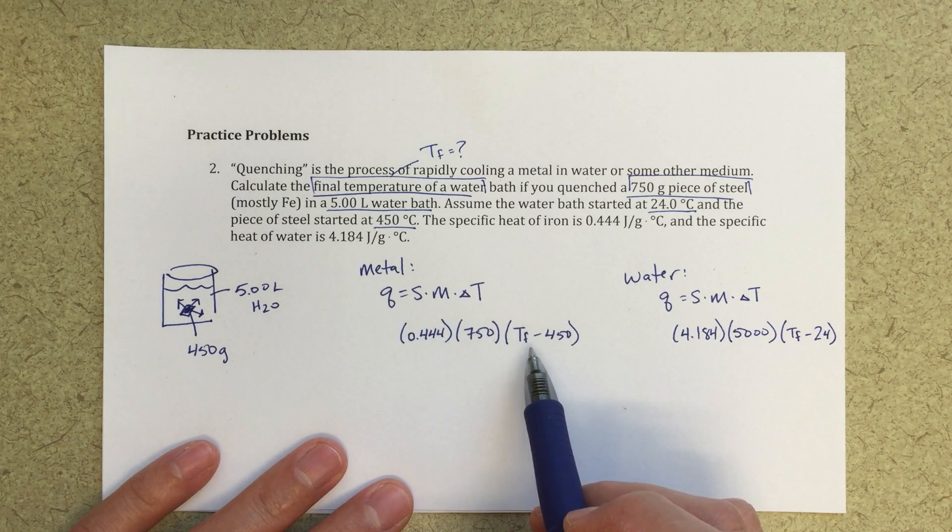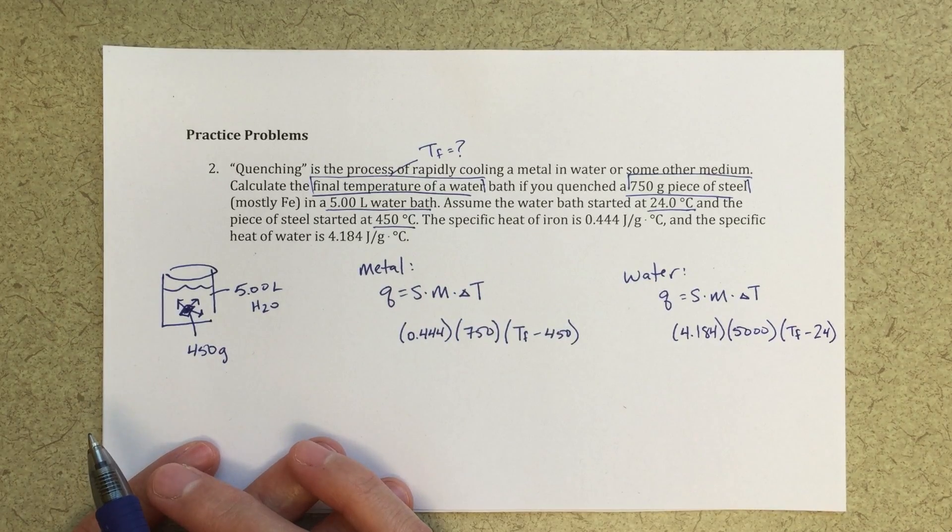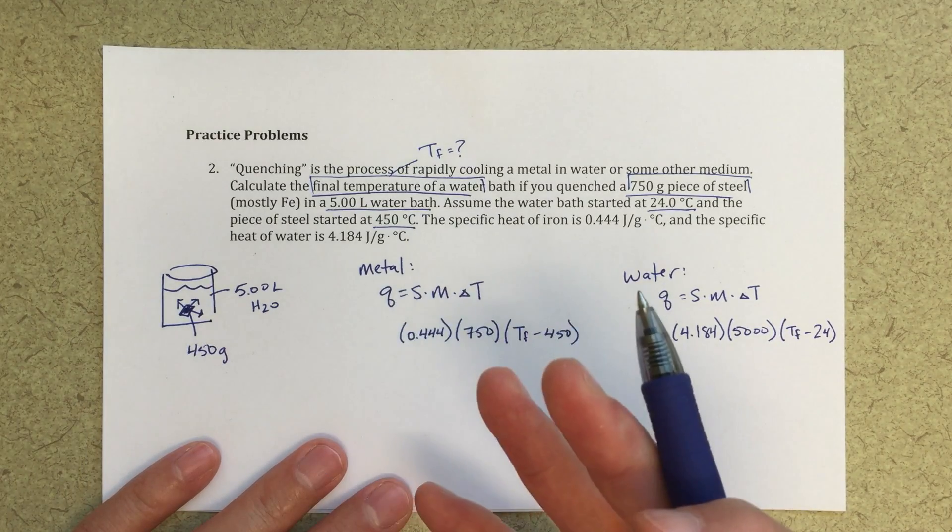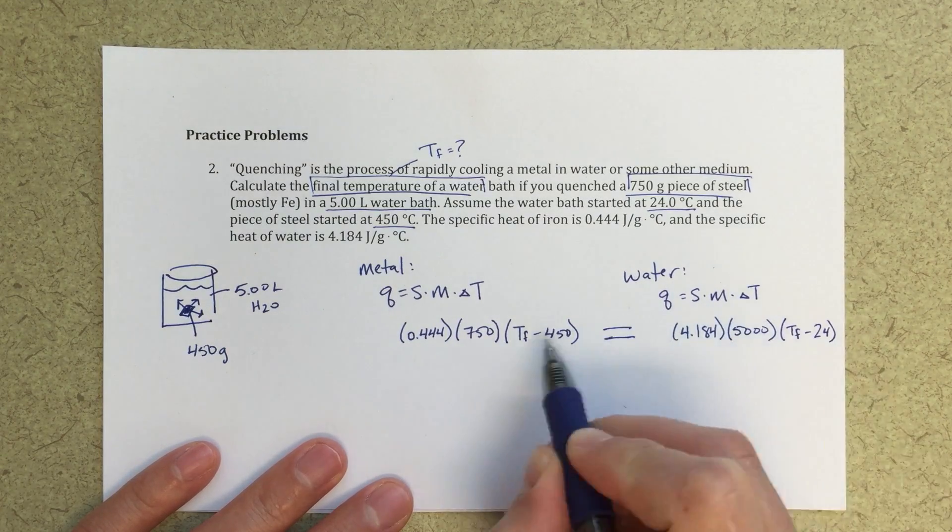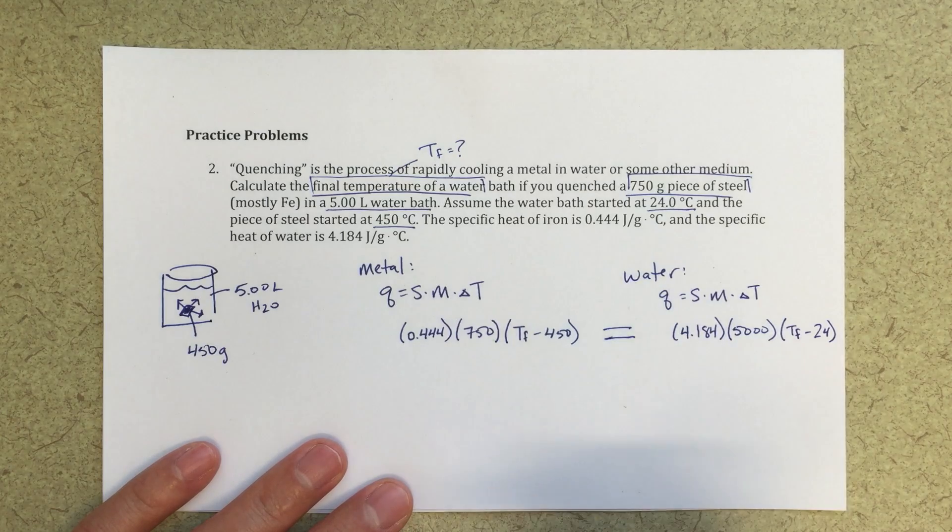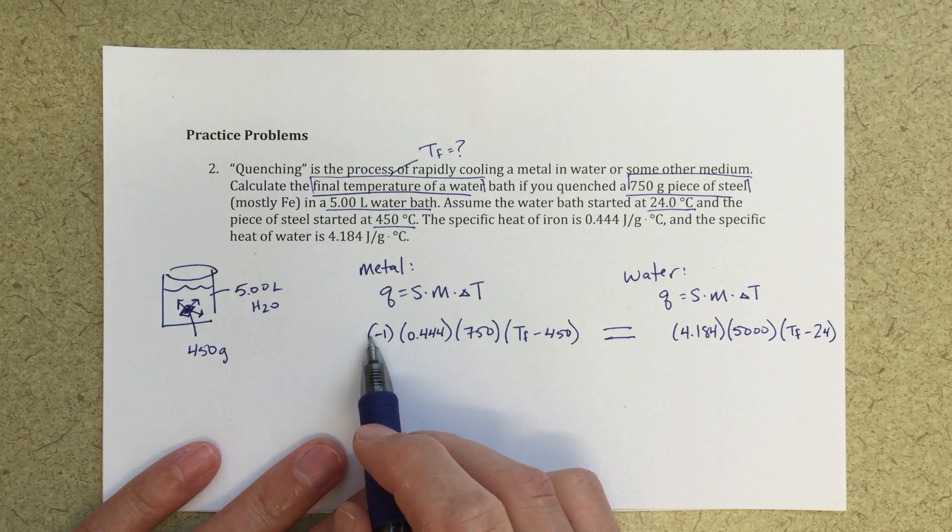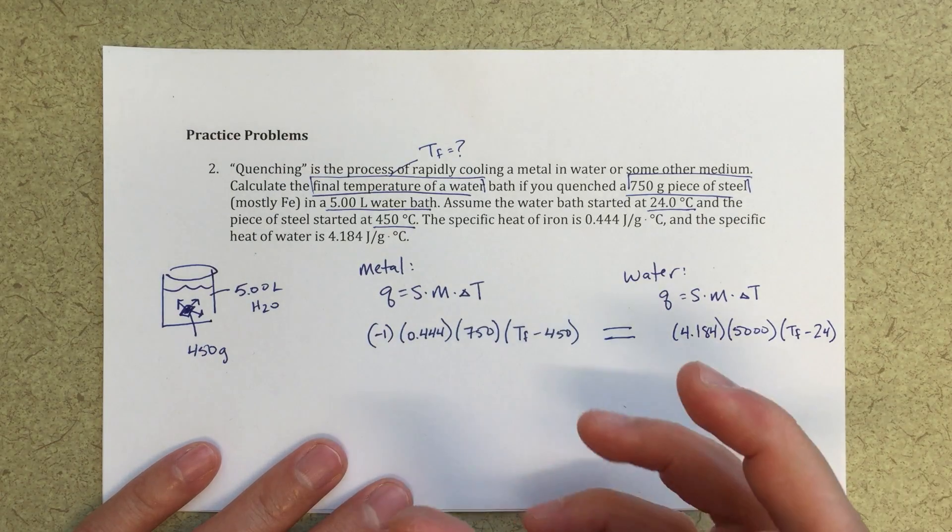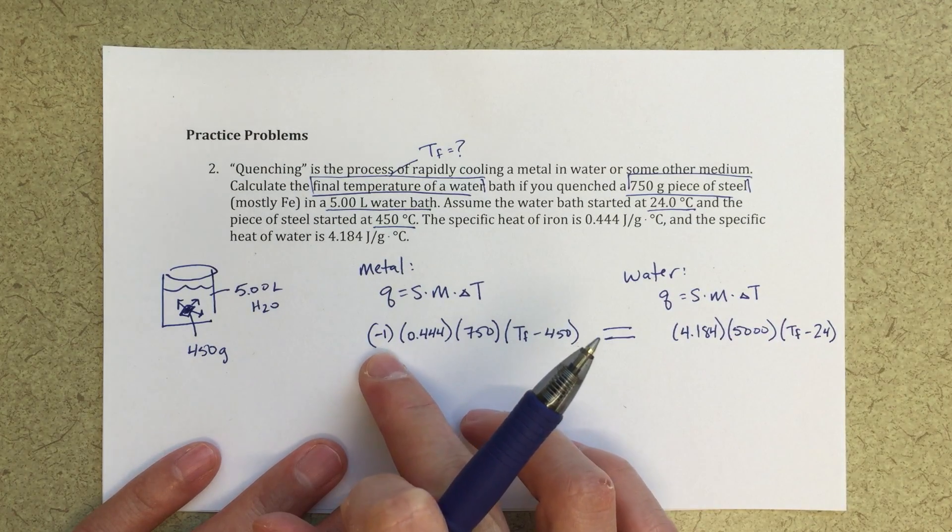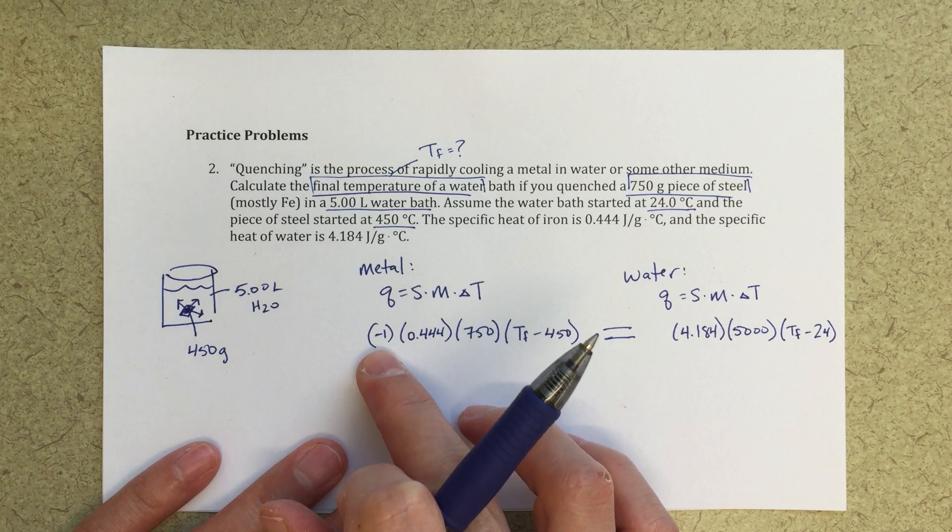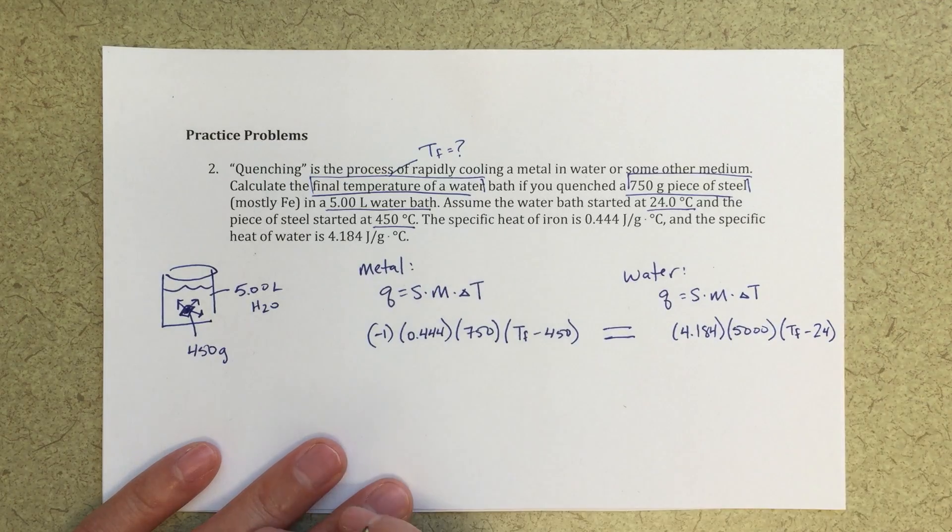And over here, this t final should be less than 450 degrees, right? We're going to be losing energy from the metal. So this over here, that's going to end up being a negative value. Now, the interesting thing here is that these should be equal to one another except for their sign. So if I introduce a minus one on this side, basically what I'm saying is that now I'm going to switch this from a negative value of energy that's being released, and I'm going to multiply by minus one. So now I'm going to get a positive value for this. And that's going to be equal to this positive value for water.